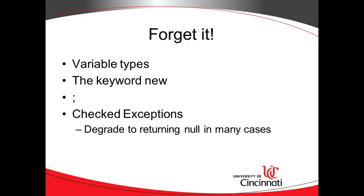Some things that you can forget if you're a Java developer: forget about variable types — objects will still have types, but variables will not. You no longer have to use the keyword new when calling a constructor; the new keyword doesn't exist in Kotlin. You don't have to end lines with a semicolon, and you don't have checked exceptions. A lot of times things will just degrade to returning null instead of throwing something like a null pointer exception.